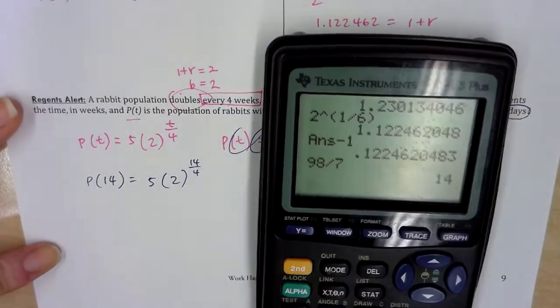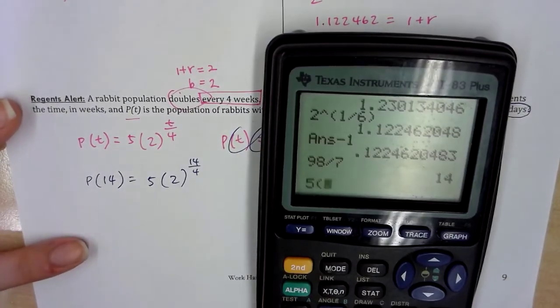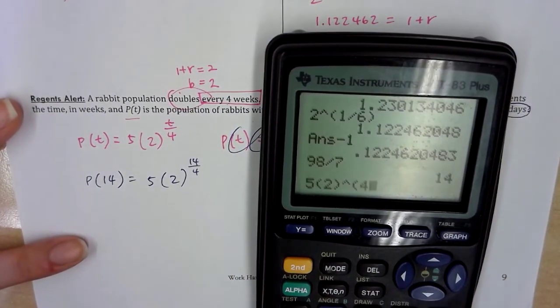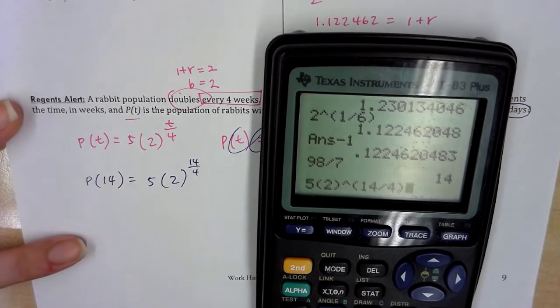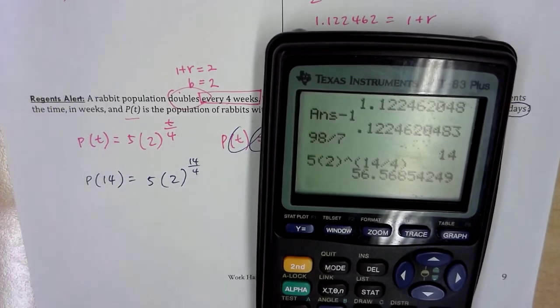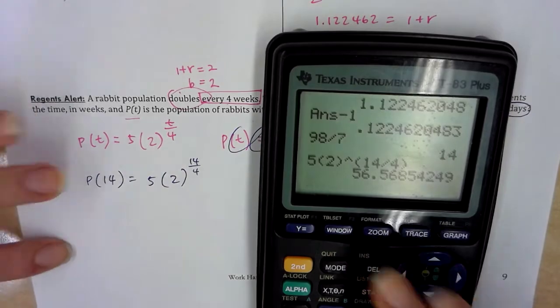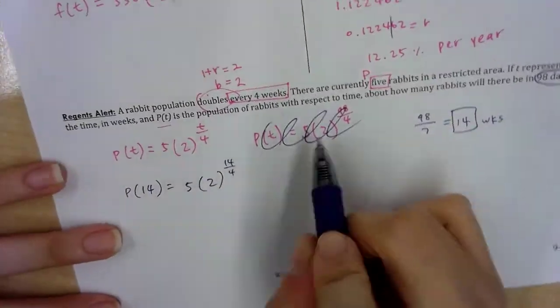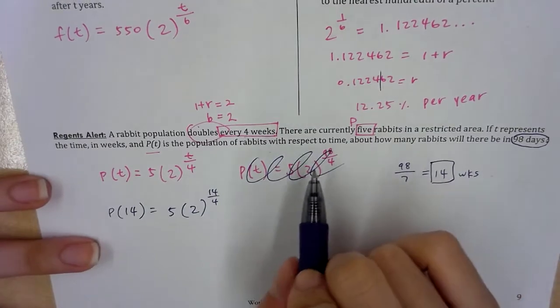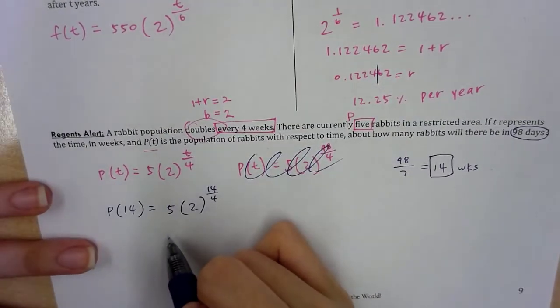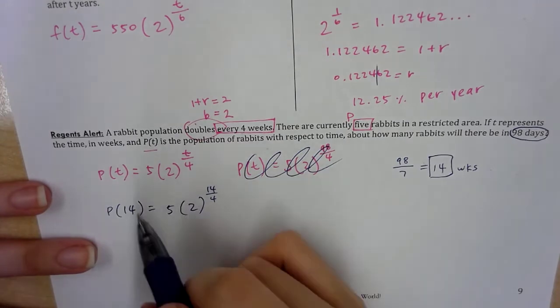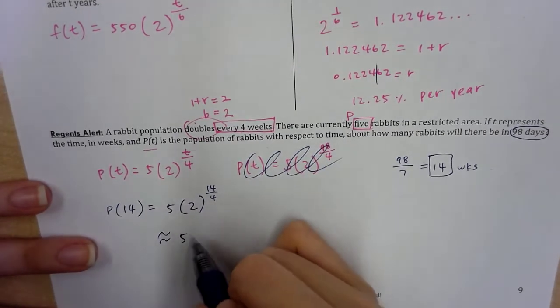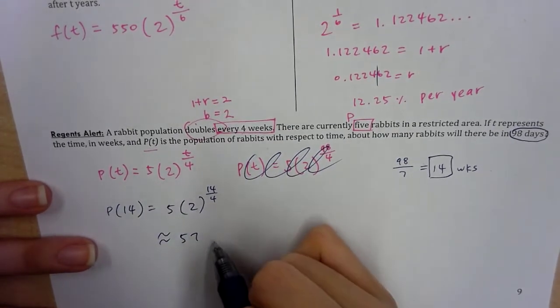So we actually do have to plug in 14 for t. Calculator: we have about 57 rabbits. We can't have 0.4 rabbits, so we're just going to round it like any number. About 57 rabbits.